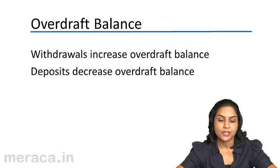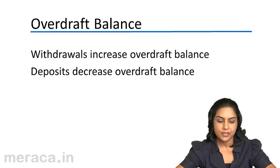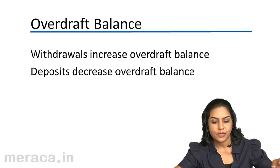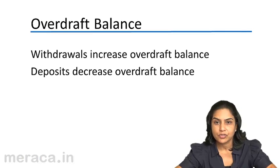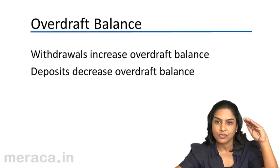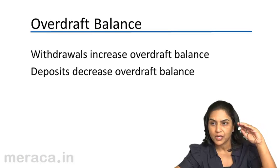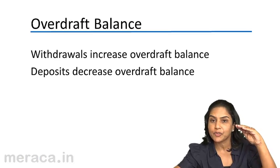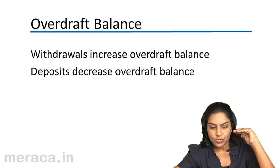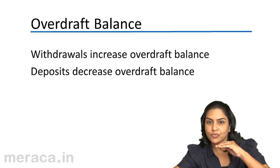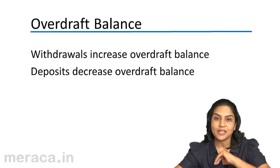Let us consider an overdraft balance — what happens when we have an overdraft balance. Withdrawals increase an overdraft balance and deposits decrease an overdraft balance. For example, suppose we have an overdraft of 10,000. We issue checks worth 3,000, so the 10,000 becomes 13,000 overdraft. Now suppose we deposit a check of 2,000 — the overdraft comes down to 11,000. Whenever we deposit, they decrease an overdraft balance; whenever we withdraw, they increase an overdraft balance.